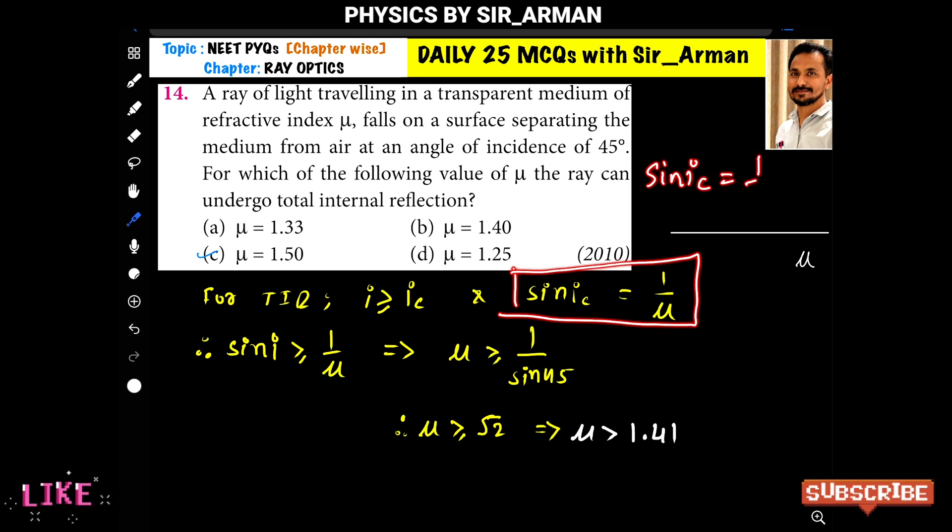So by using this condition, we know that i should be greater than or equal to ic. Multiplying by sin: sin i is greater than or equal to sin ic. Now instead of sin ic we can write 1 by μ, so therefore sin i is greater than or equal to 1 upon μ.